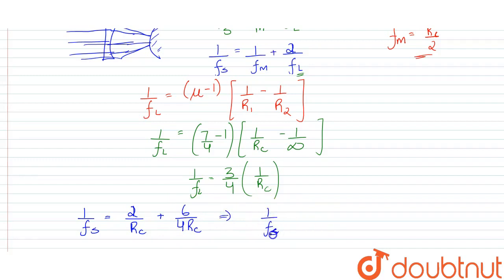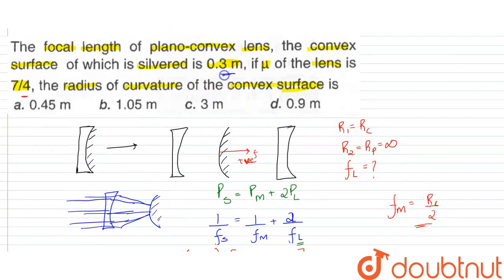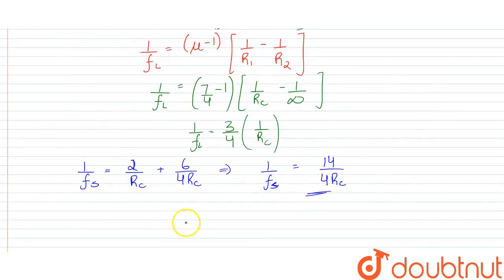This gives 1/f_s = (8 + 6)/(4R_c) = 14/(4R_c). Since f_s = 0.3 meters, we have 1/0.3 = 14/(4R_c), so R_c = 14 × 0.3 / 4.